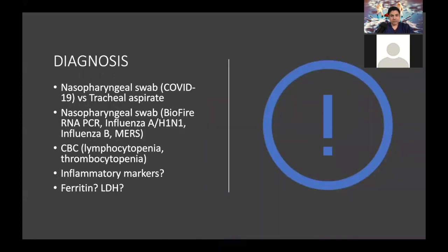Diagnosis for COVID-19 is done by nasopharyngeal swab or tracheal aspirate. If you suspect COVID-19, you should also do nasopharyngeal swabs for common diseases — RNA PCR for common respiratory infections, influenza A/H1N1, influenza B, and MERS. Some reports suggest about 80% of patients present with lymphocytopenia or thrombocytopenia less than 100,000. Some studies also suggest sending inflammatory markers: CRP, ferritin, and LDH have been suggested to monitor for secondary HLH.